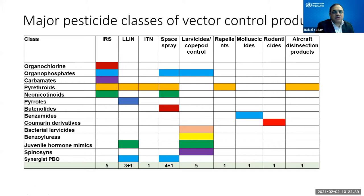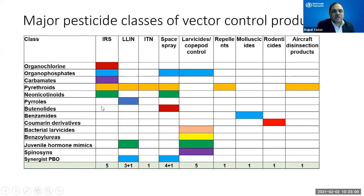Neonicotinoids, introduced about three years ago by the Global Malaria Program, currently have a product used for IRS and one or two space spray formulations. Pyrrole chlorfenapyr is used in LLINs. Flupyradifurone is under advanced evaluation for space spray. PBO is used in long-lasting nets and in a particular space spray product.